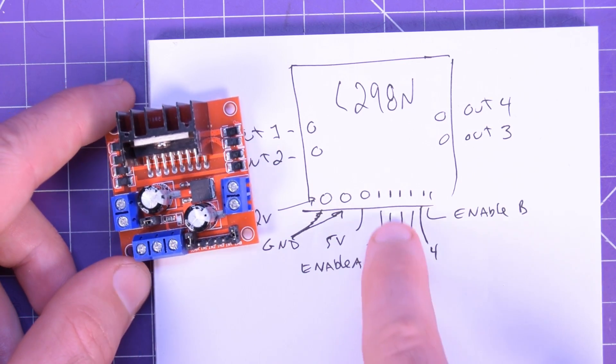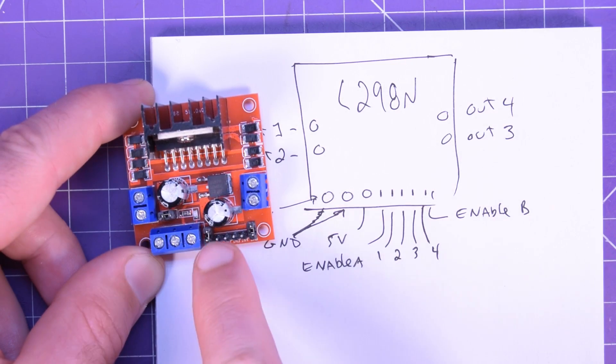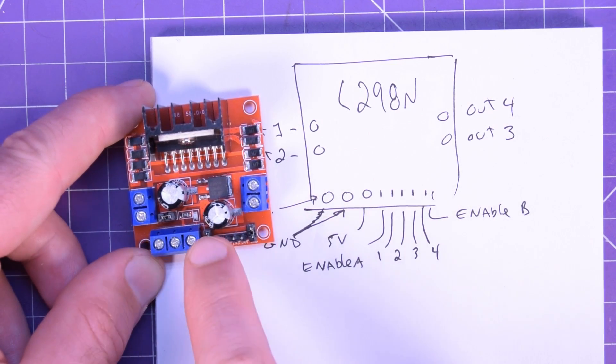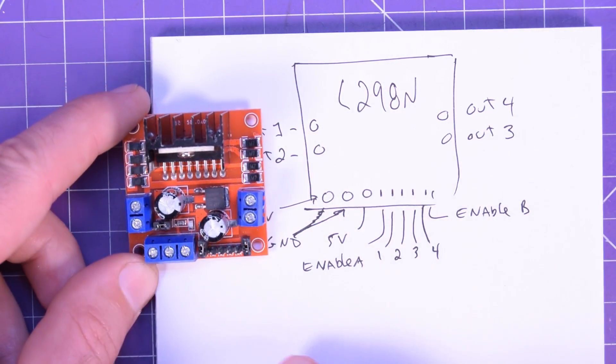Then you have your enable A which has a jumper which is jumpered to the 5 volts on here. So you can remove that and actually just use your microcontroller to turn on and off the motor here, but I will show you another way to do it.